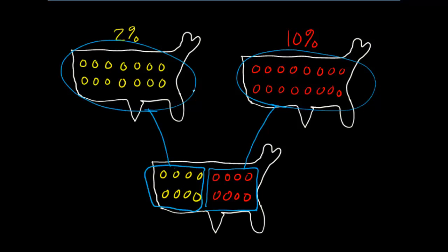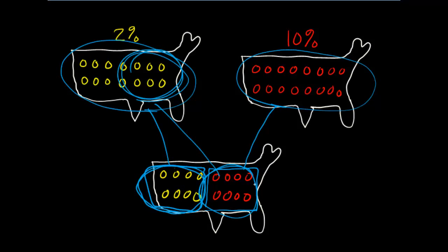This is called the assumption of exchangeability. We call it exchangeability because it means we can essentially exchange these nonsmokers that we actually see for what we would have seen in smokers had they been nonsmokers, and vice versa — we can exchange smokers for what we would have seen in nonsmokers had they in fact been smokers. This may or may not be true, and it's one of the things we'll think about when interpreting the uncertainty in our results.